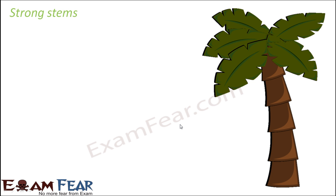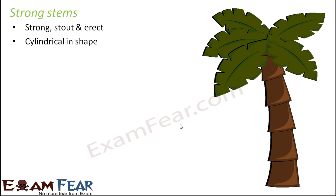The first category of stem we will talk about in aerial stems is strong stems. The name itself is self-explanatory — these are stout and erect stems. If you look at a palm tree or coconut tree, their stems are really hard, woody, and strong. They are cylindrical in shape. So they are all examples of strong stems.